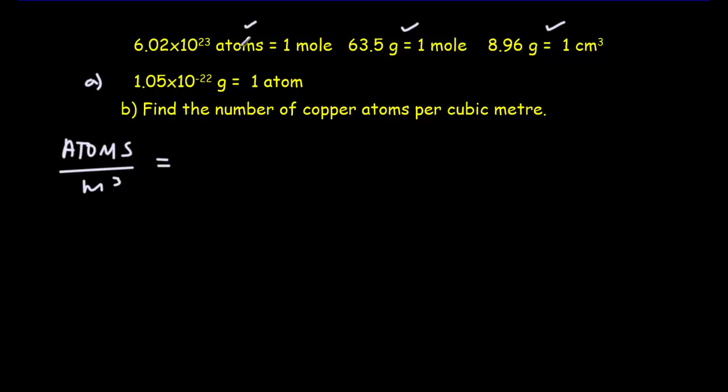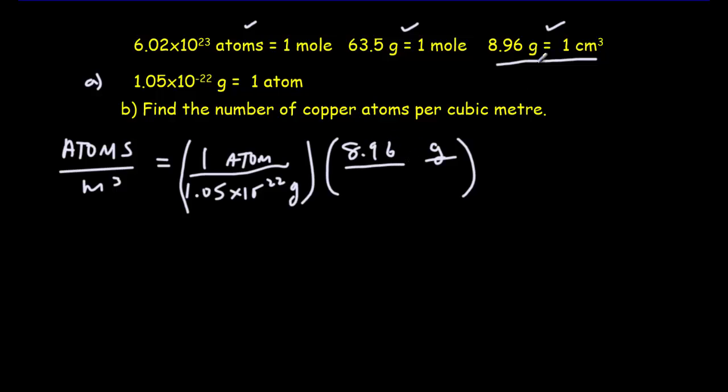Okay, so, well, I've got atoms right here. I can say that one atom is worth 1.05 times 10 to the minus 22 grams. Secondly, I don't like the grams. So I'm going to try to go from grams into volume units. And here's grams and volume units. I can say that 8.96 grams is worth 1 centimeter cubed.